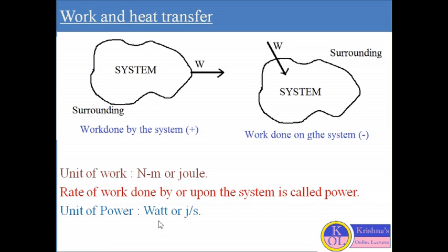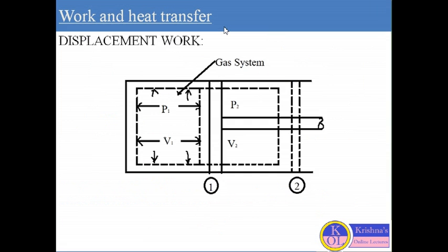The unit of power is watt, or joule per second. There are various types of work transfer considered between the system and surrounding. One kind of work I am going to discuss to easily understand work transfer is displacement work. I will describe displacement work using a piston-cylinder arrangement.